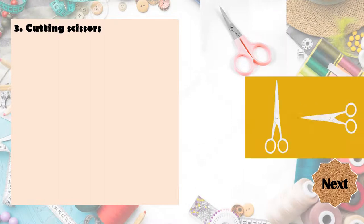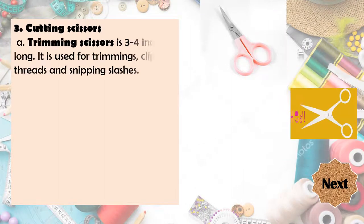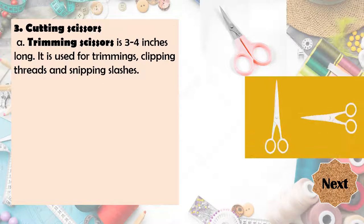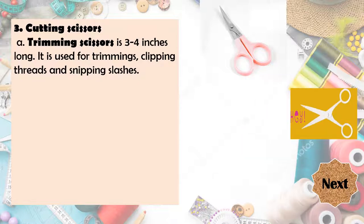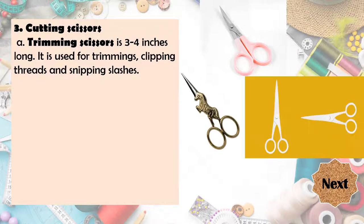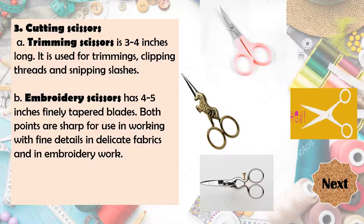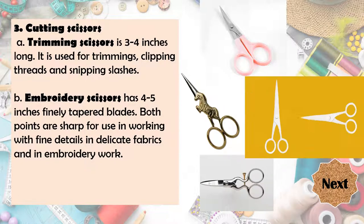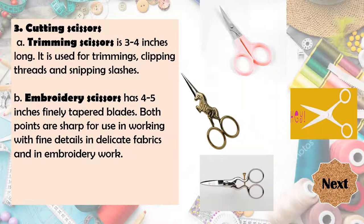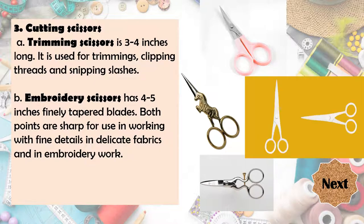This is what we call the trimming scissors. It is 3 to 4 inches long and is used in trimmings, clipping threads, and snipping slashes. Another cutting scissors is the embroidery scissors. It has 4 to 5 inch fine and tapered blades. Both points are sharp for use in working with fine details, in delicate fabrics, and in embroidery work.